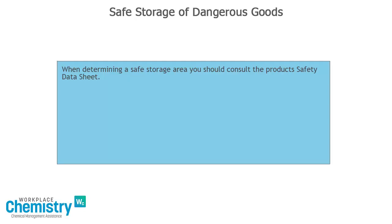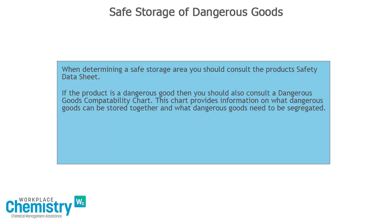When determining a safe storage area, you should consult the product safety data sheet. If the product is a dangerous good, then you should also consult a dangerous goods compatibility chart. This chart provides information on what dangerous goods can be stored together and what dangerous goods need to be segregated.